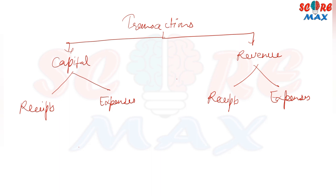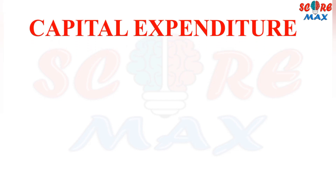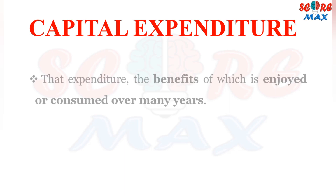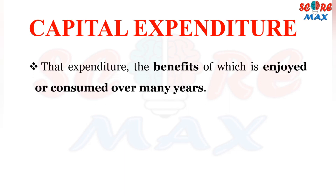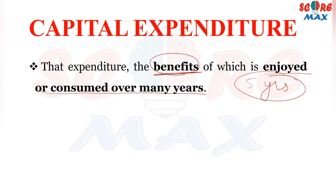Now, we will talk about capital expenditure. Capital expenditure refers to those expenses or expenditures the benefit of which is enjoyed over a period of time. For example, if we purchase a machinery, we will use that machinery for a few years, let's say five years. That expenditure incurred for buying this machine is enjoyed over a period of five years, that is why it is termed as capital expenditure.